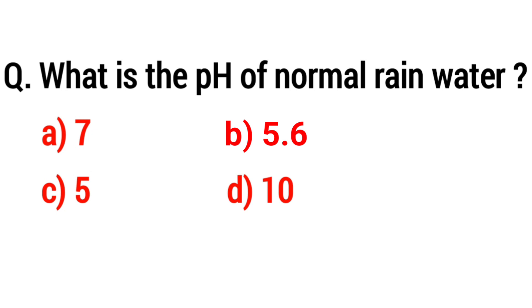Question: What is the pH of normal rainwater? Option A: 7, Option B: 5.6, Option C: 5, Option D: 10. If you know this answer, you can tell me in the comment section. Thank you.